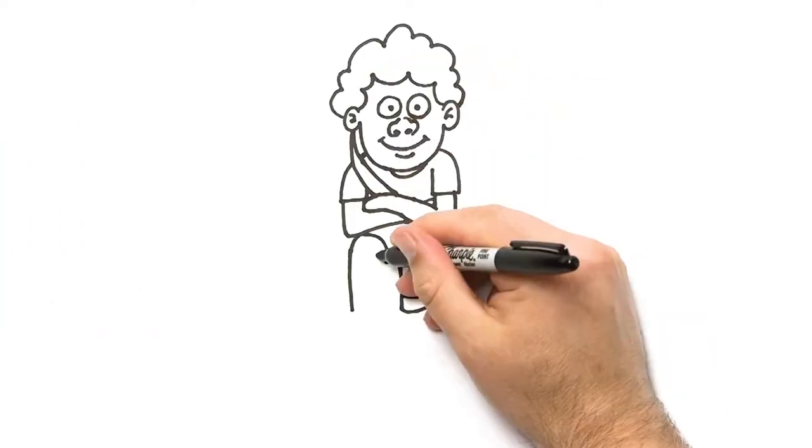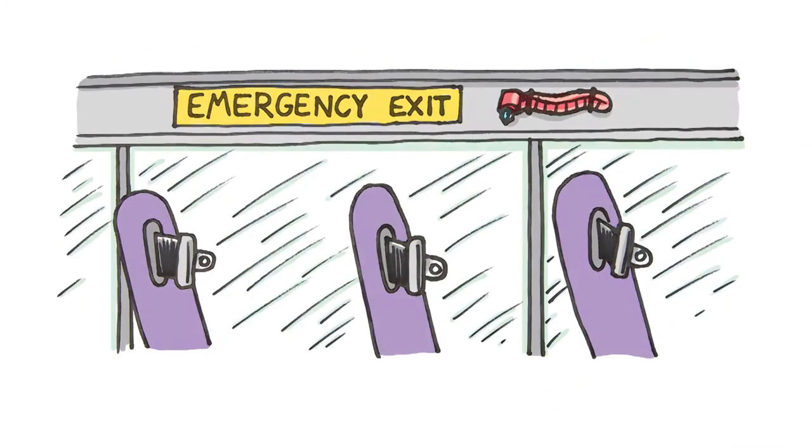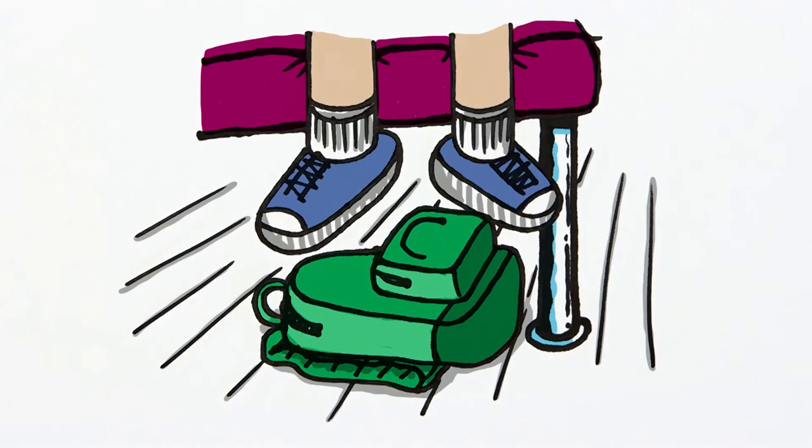When you're on board the bus, move down the bus and sit in your seat. If the bus has seat belts, you must wear them at all times. Make sure you know where the emergency exit is in case you ever need to use it. School bags should be placed under the seat or in the racks.